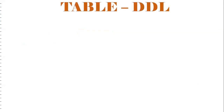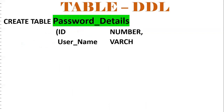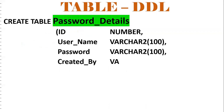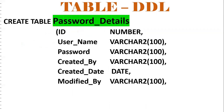For this requirement, I need to create one table — using DDL: CREATE TABLE password_details. In this table, the columns are: ID (number), username (VARCHAR), password, created_by, created_date (when it was created), modified_by, and modified_date (when it was last modified).